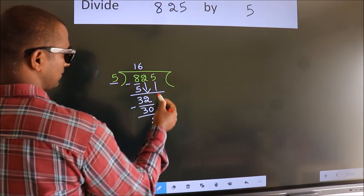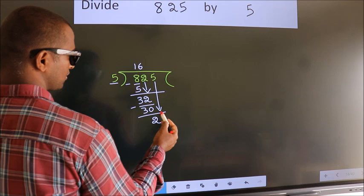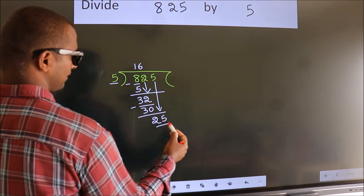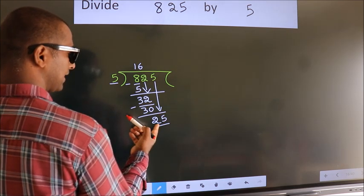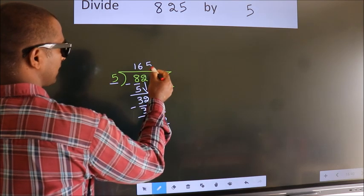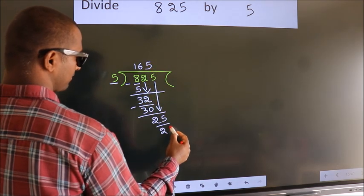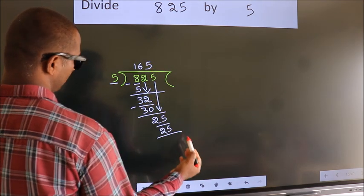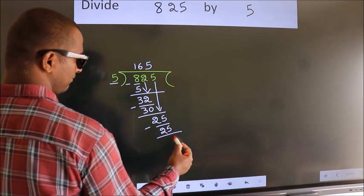After this, bring down the beside number. So, 5 down. So, 25. When do we get 25? In 5 table. 5 fives, 25. Now, we subtract. We get 0.